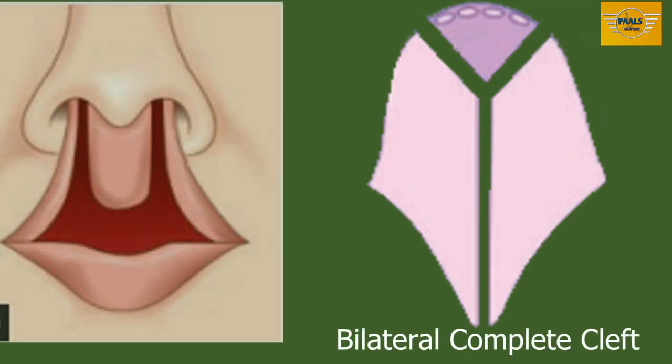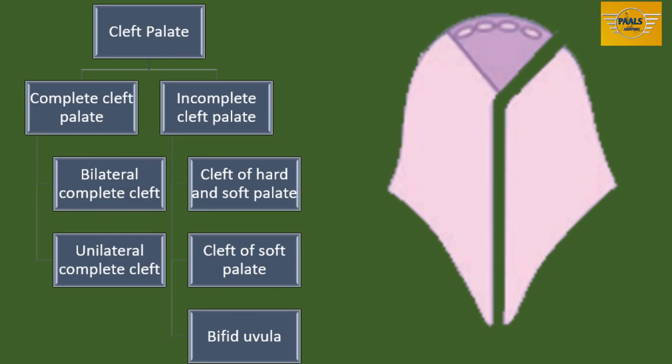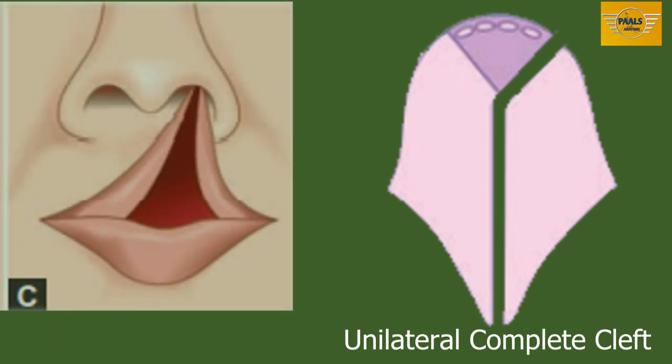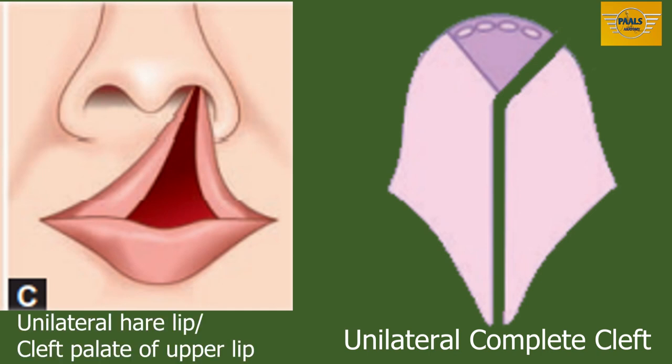In unilateral complete cleft, there is no fusion of one side of the secondary palate with the primary palate, leaving one part of the secondary palate completely separated, as you can see in the illustration. This condition is usually accompanied with unilateral cleft of the upper lip.